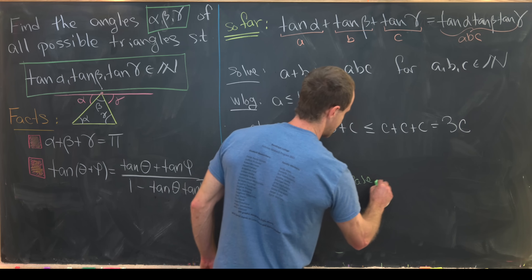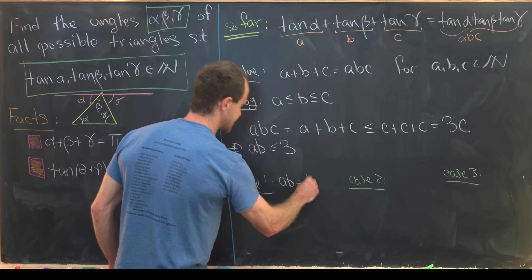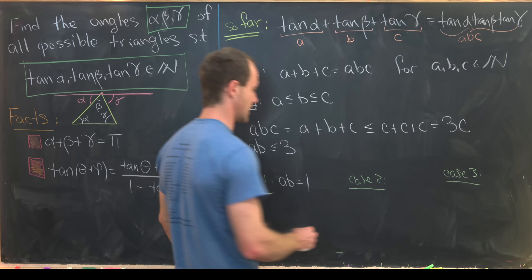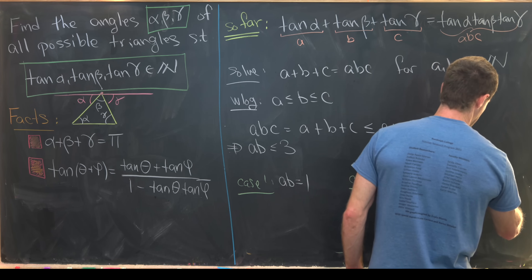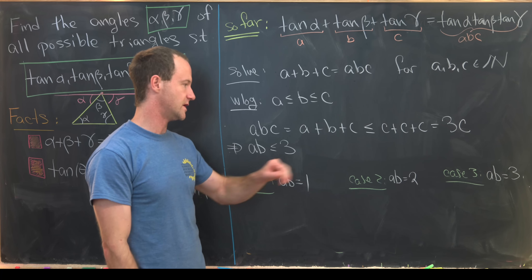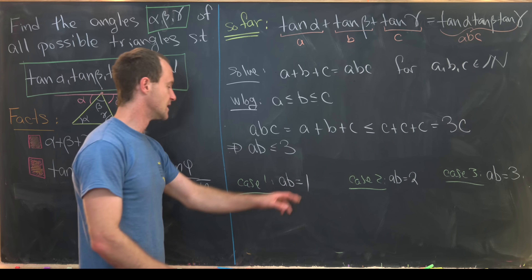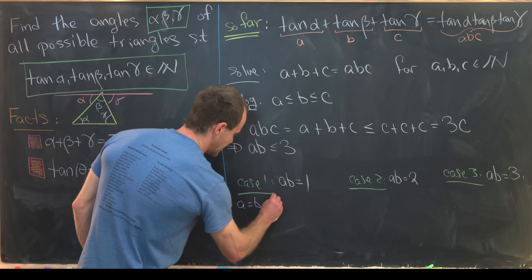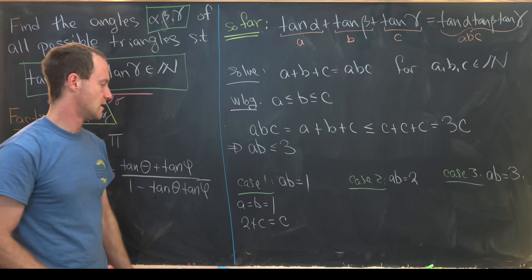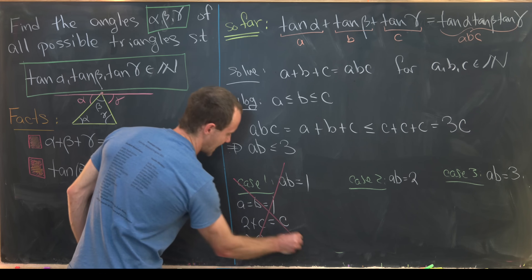Case 1: ab = 1. Since a and b are natural numbers, a = b = 1. Substituting into the equation gives 2 + c = c, which implies 2 = 0 — a contradiction. So this case yields no solution.